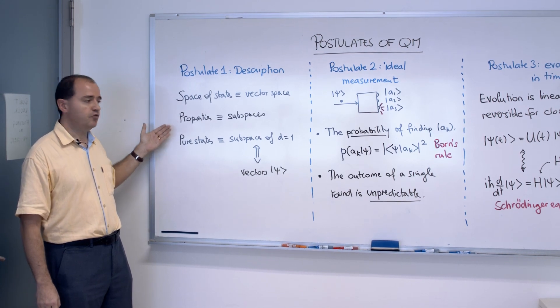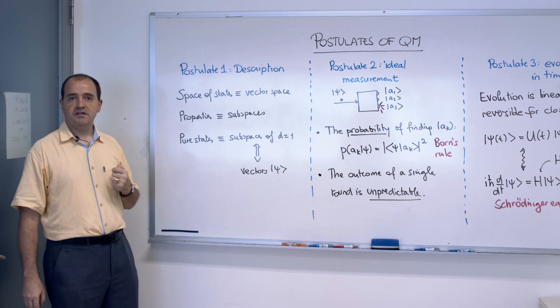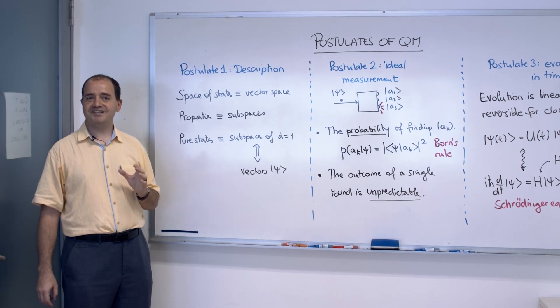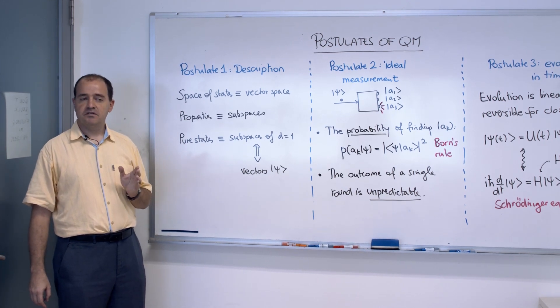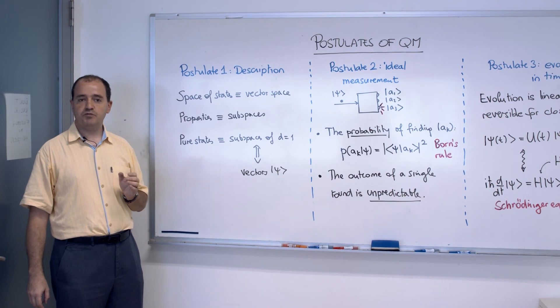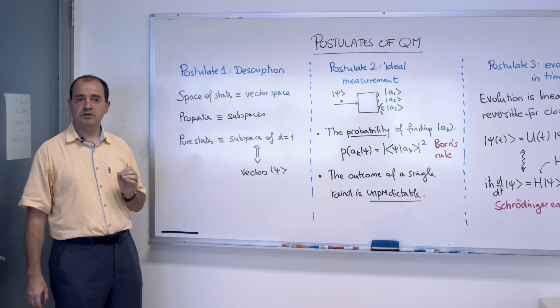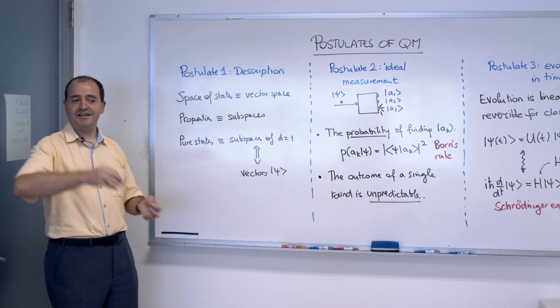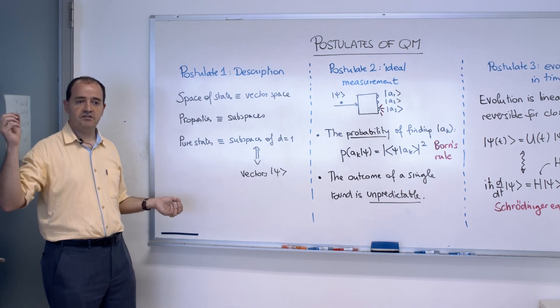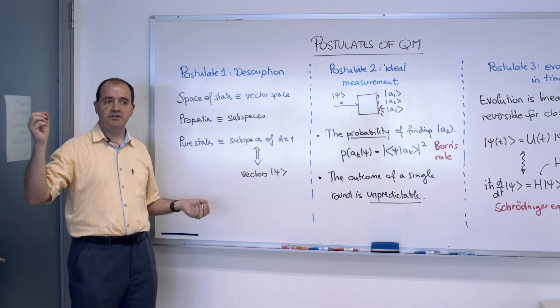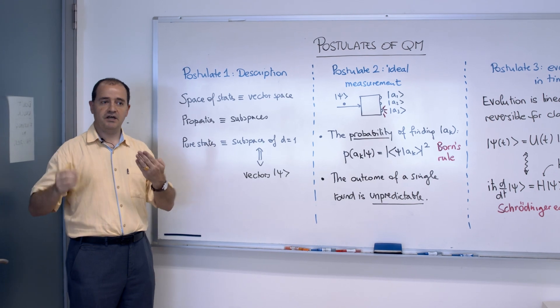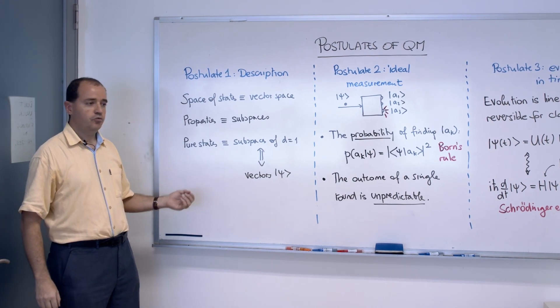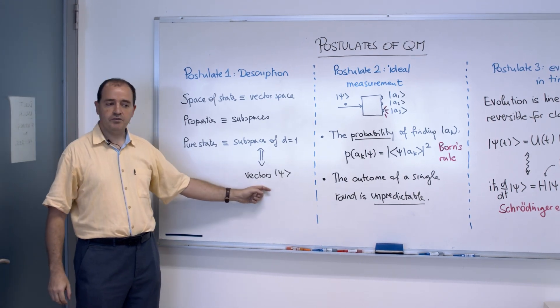What I've not introduced yet is the idea of pure state. A pure state is a state of the system with maximally defined properties. So, intuitively, it should correspond to the smallest possible subspace. And the smallest possible non-trivial subspace is a subspace of dimension one. Therefore a line in this vector space. Now a line can also be represented by the vector that lies on the line. Therefore, traditionally, we associate pure states with vectors.